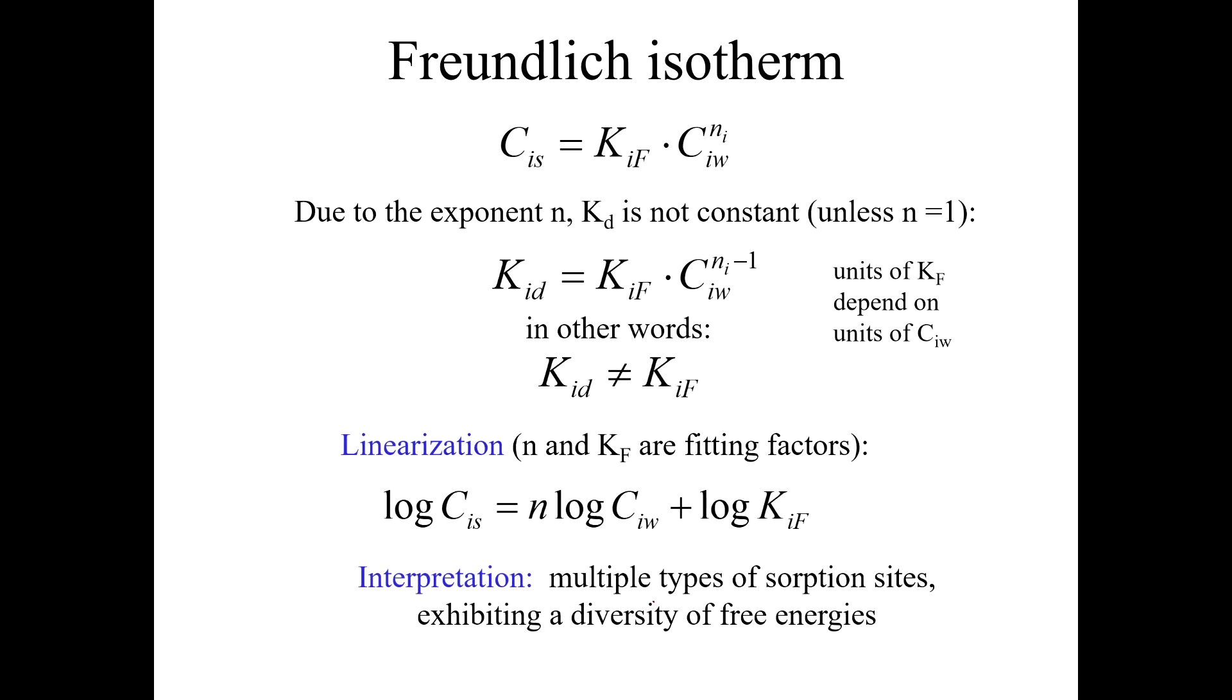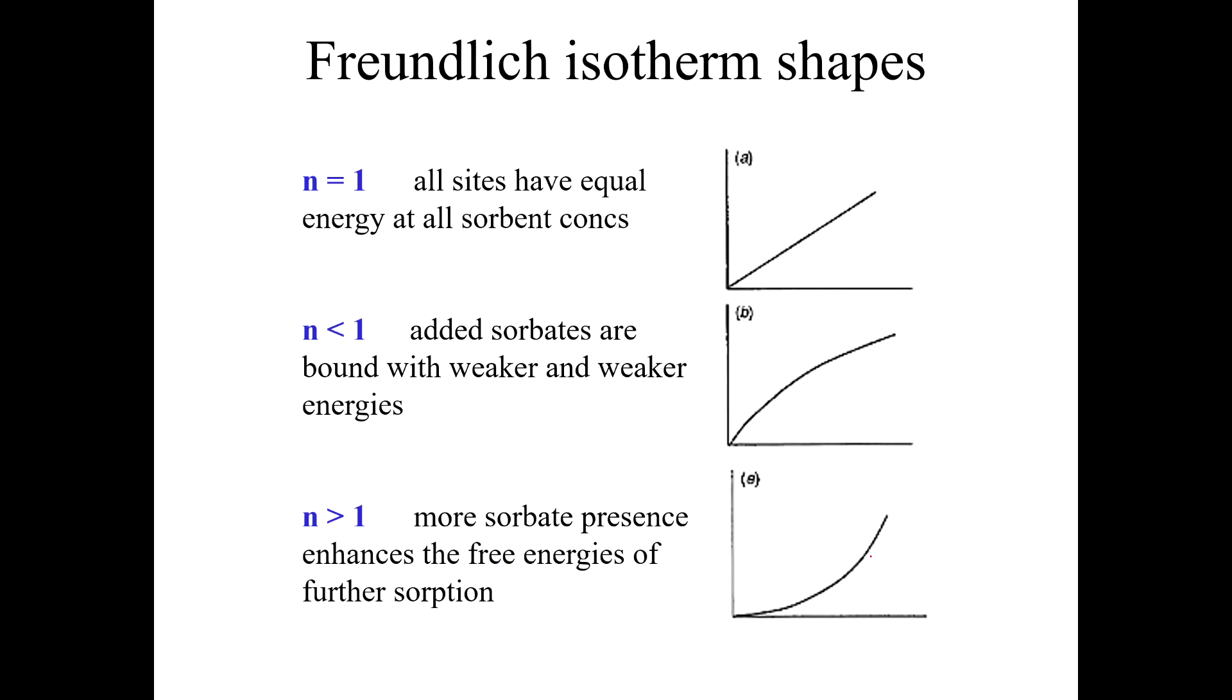So the Freundlich isotherm, because of this exponent N here, this is not a linear isotherm. N is what gives it the curvature. If N is less than 1, it will curve downward. And if N is more than 1, it will curve upward. So this equation can describe both of these circumstances. It just depends on what N turns out to be. If N is equal to 1, then you've hit the jackpot and you have a linear isotherm. But let's face it, that never happens.